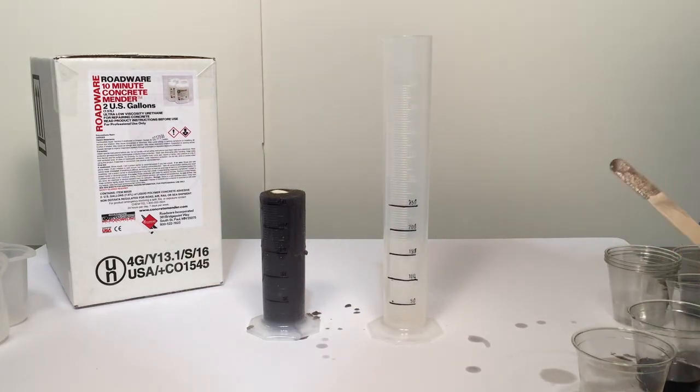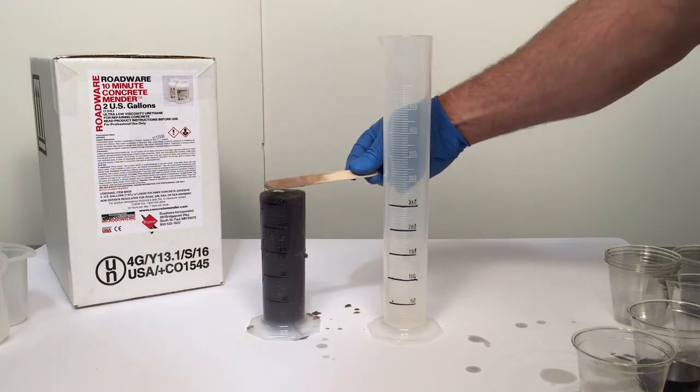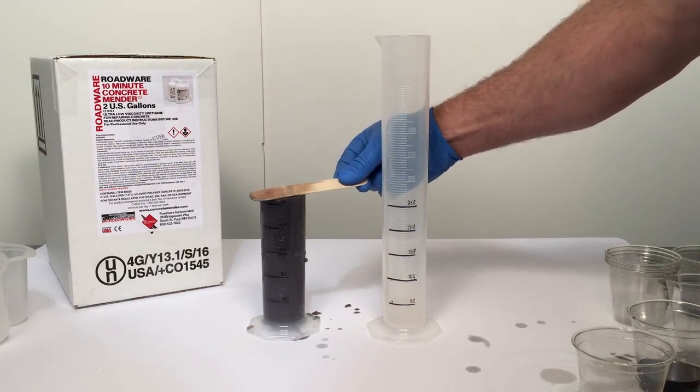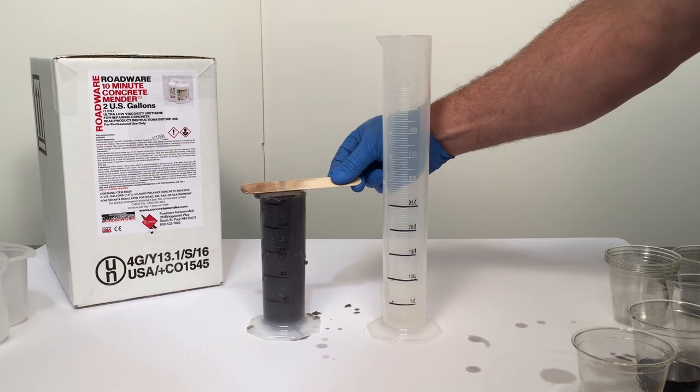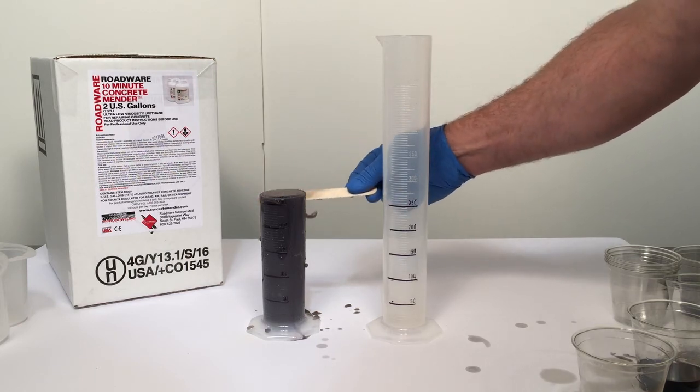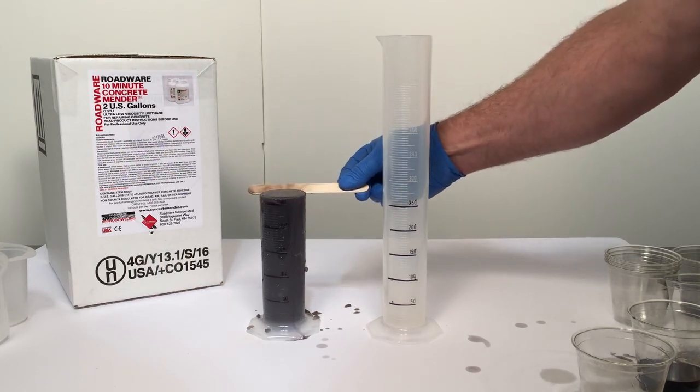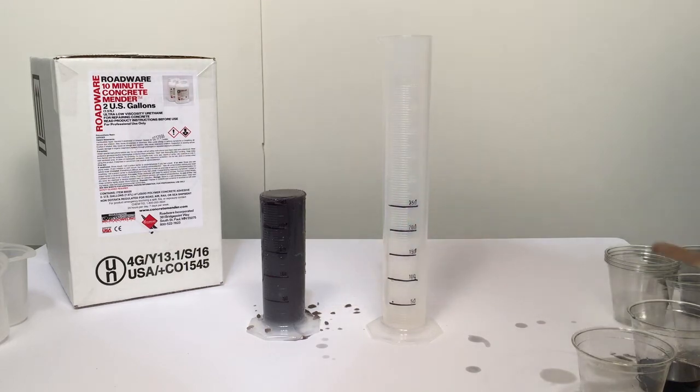Concrete Mender is so thin it actually wants to grab onto the rock and those sidewalls of the concrete so what it's doing is it'll penetrate into that sidewall and all the little fissures and micro cracks generated during the drilling process and lock itself into the concrete very well because of that low viscosity.